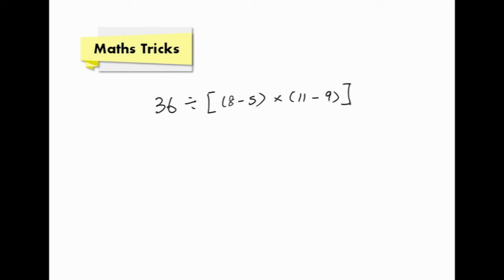That means we have to work out 8 minus 5 and 11 minus 9 first. After that, we can keep the square brackets. Let's work it out. The next step will be 36 divided by 8 minus 5 is 3, 11 minus 9 is 2. So, the next step is 36 divided by 3 times 2, close square bracket. Then we move on and get the final answer, 6.